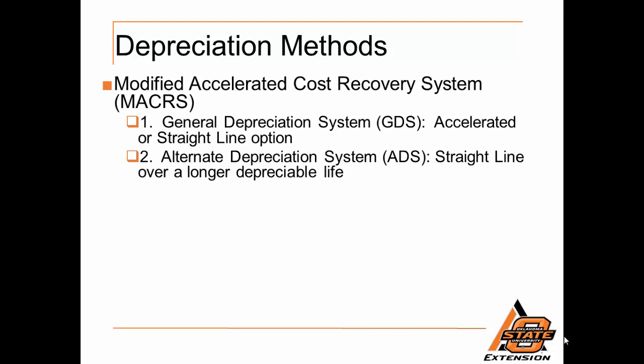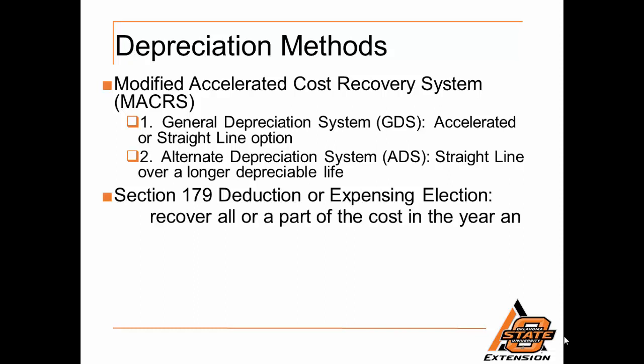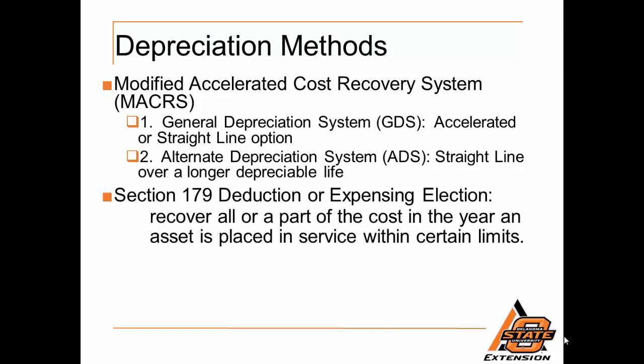Depreciation methods currently in use are under the modified accelerated cost recovery system. We have the general depreciation system, which includes normal accelerated or straight line options for depreciating an item. We also have the alternate depreciation system, which is straight line over a longer depreciable life of an asset. We also have the Section 179 deduction — also referred to as the expensing election — which is the ability to recover all or part of the cost in the year an asset is placed in service, within certain limits.